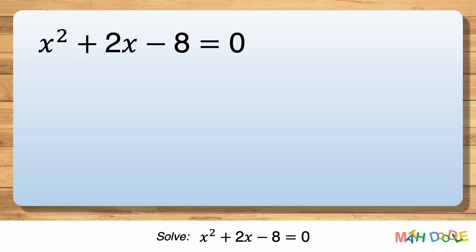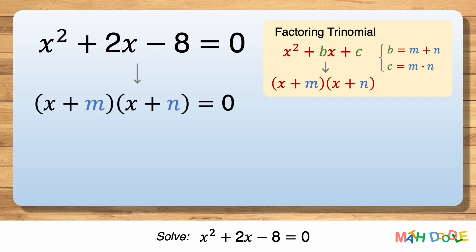To solve this quadratic equation, let's first factor the left side of the equation. So, to transform the equation into the form of x plus m times x plus n equals 0, we must find the values of m and n.